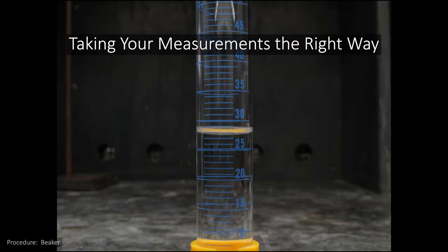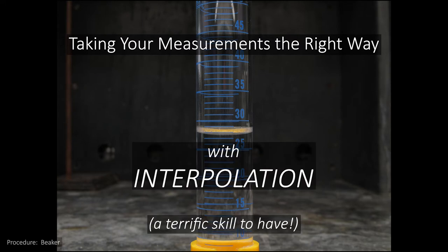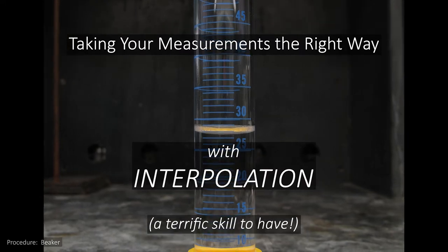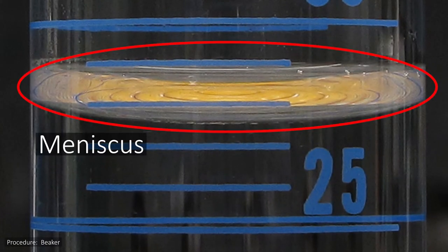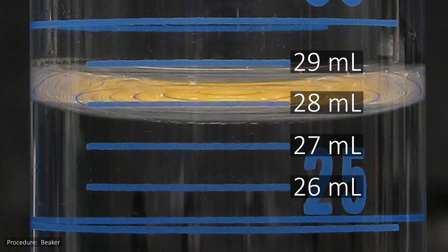Taking the measurements you'll need for the beaker will be a relatively straightforward process, though there is something you'll need to know about in order to read it properly, and that something is interpolation. To show you how this works, I've got a graduated cylinder here with some water in it, and you can see the bottom of the meniscus, that's the curvy shape the top of the water takes, the bottom of the meniscus falls somewhere between the 27 and 28 milliliter marks.